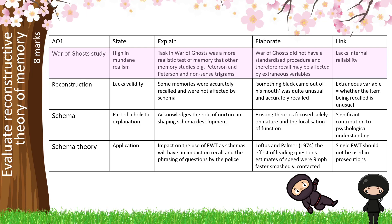We then counter-argue by noting there was not a standardised procedure because different participants were tested over different lengths of time. Therefore, extraneous variables — other variables beyond our IV and DV — may have had an impact on results. As our mini conclusion, this means the research lacks internal reliability and is inconsistent within itself.